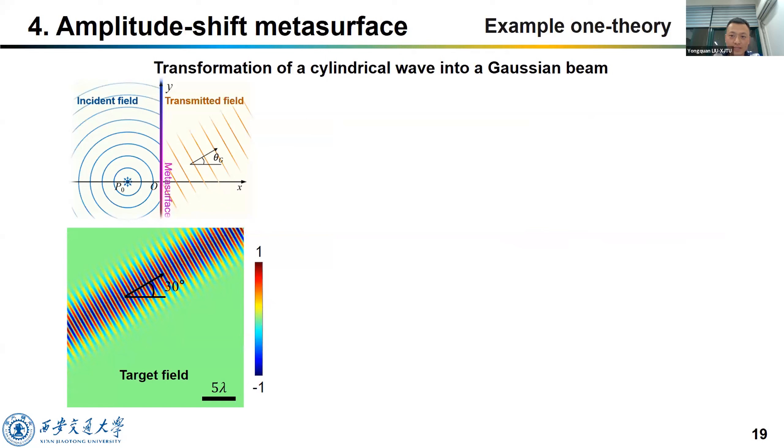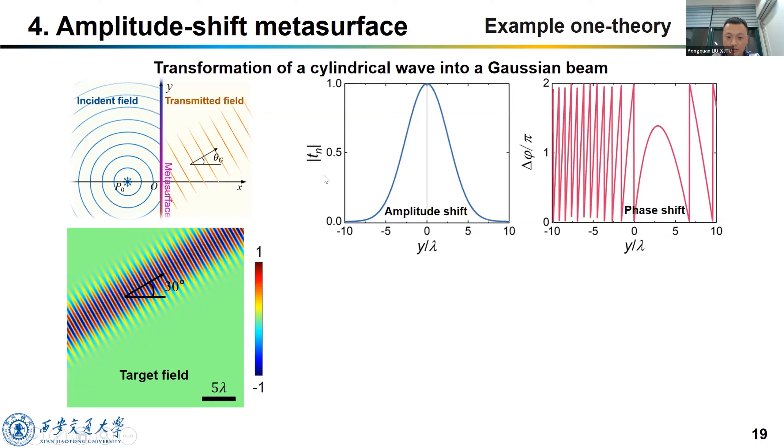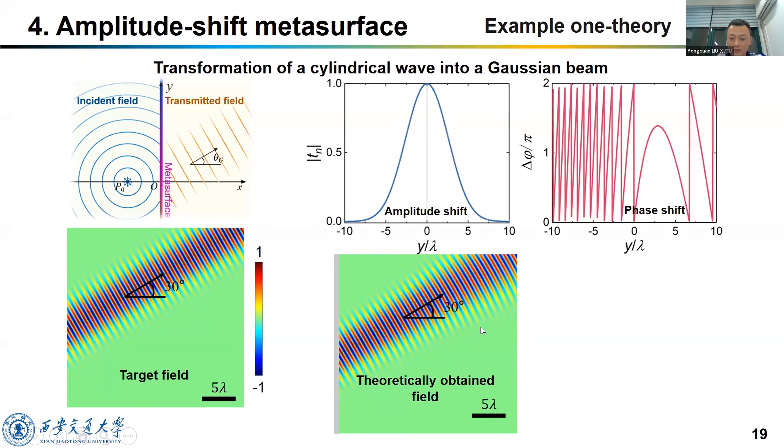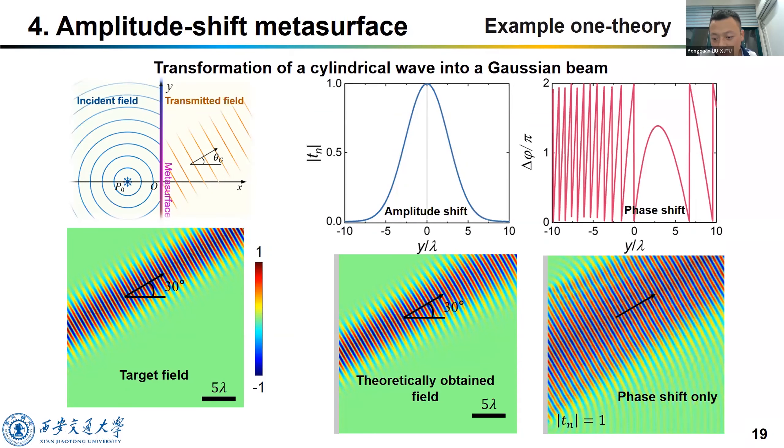We will use some examples to see how to design amplitude-shift metasurface. The first one is to transform a cylindrical wave into a Gaussian beam, a point source to generate a Gaussian beam like this field. Based on the theory, the transmission and the phase discontinuity should be like this. And here is the theoretically obtained field. We know that if we don't cover the amplitude discontinuity, the resulted wave field should be like this. It's quite different from our target pattern. So the amplitude shift metasurface is quite necessary.